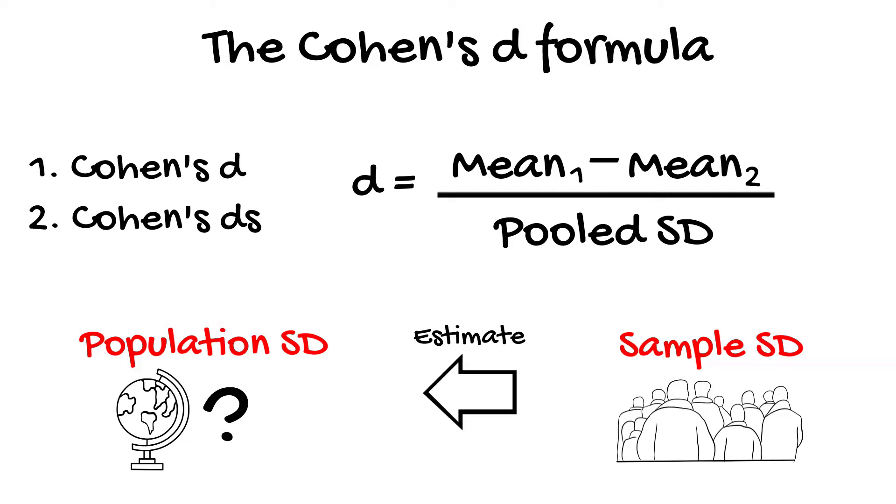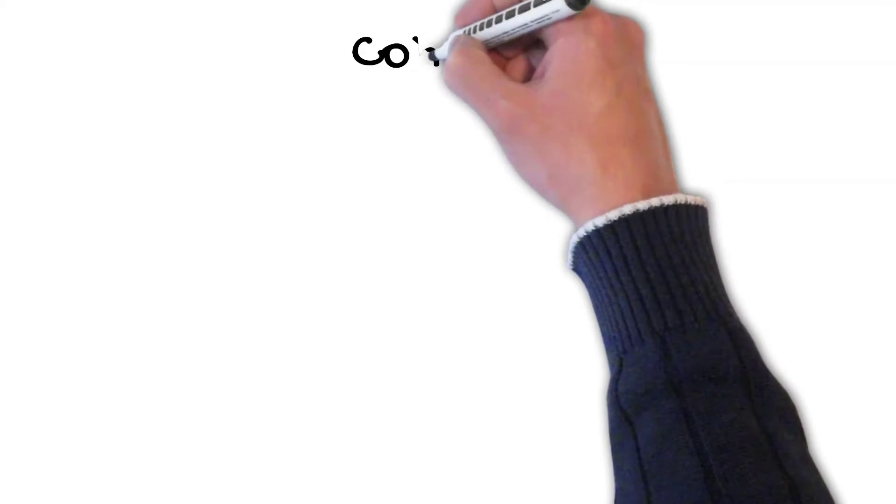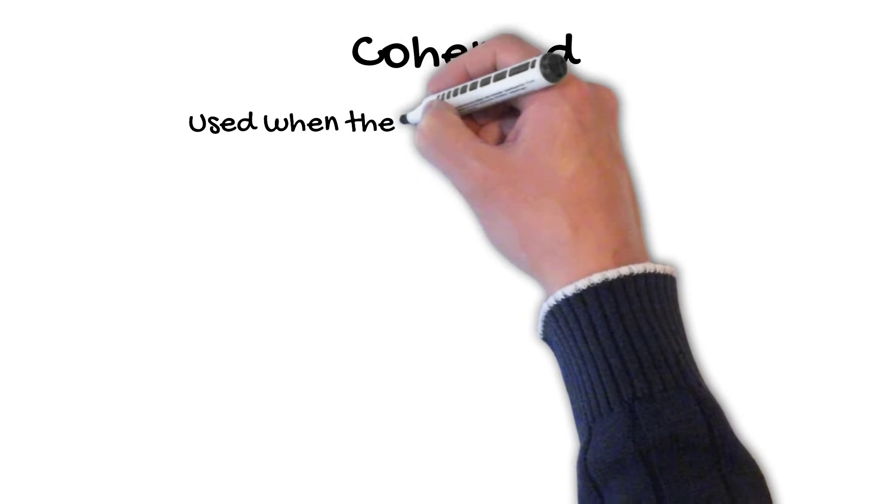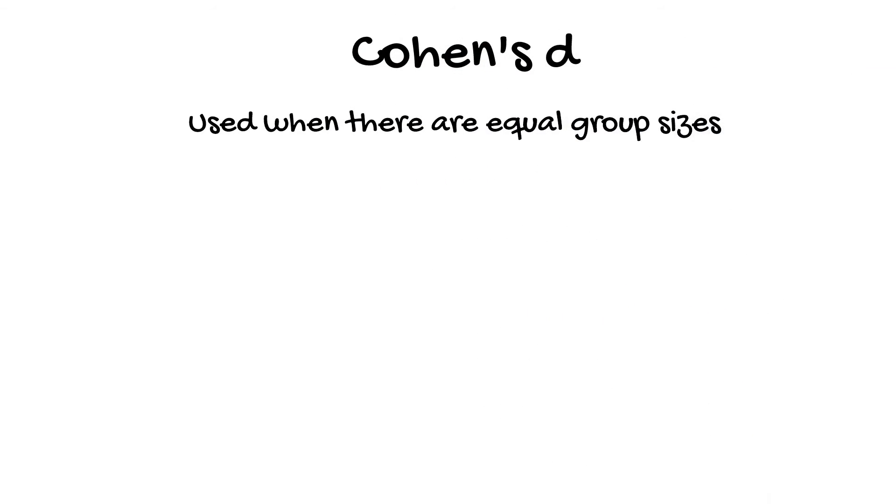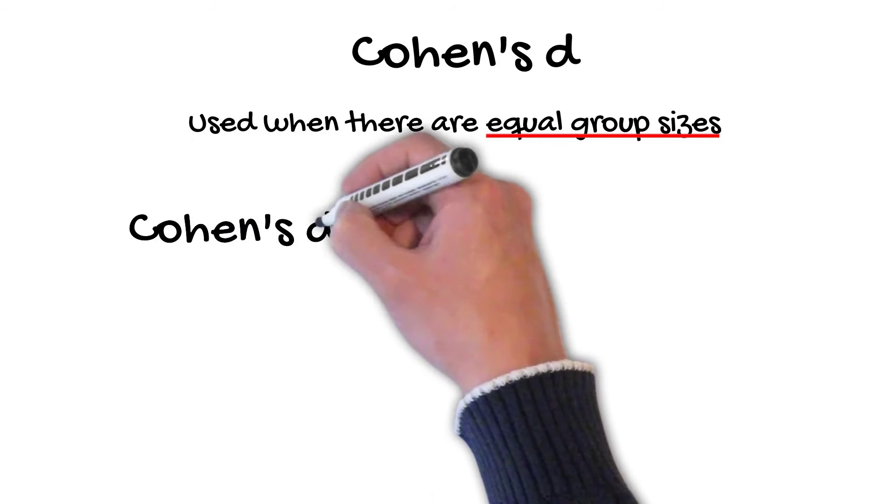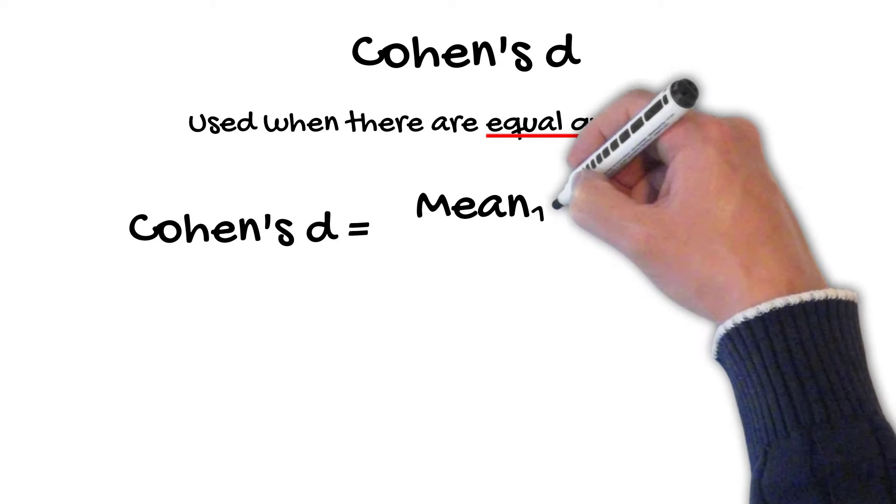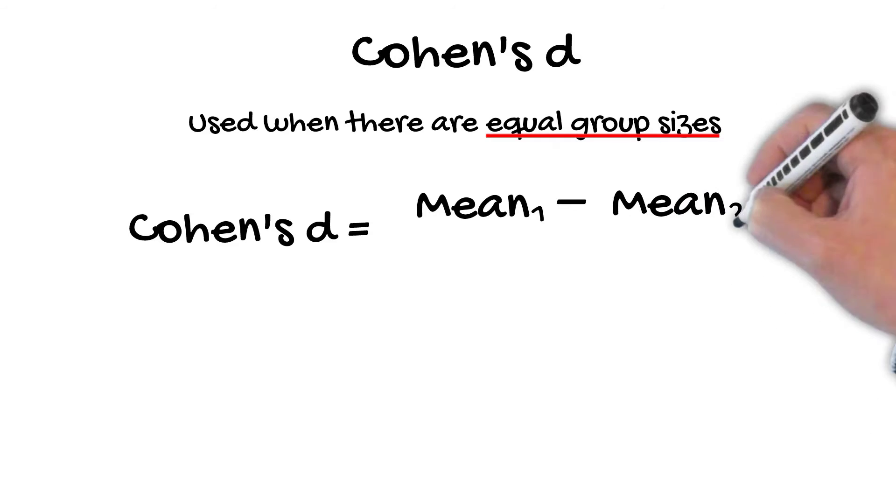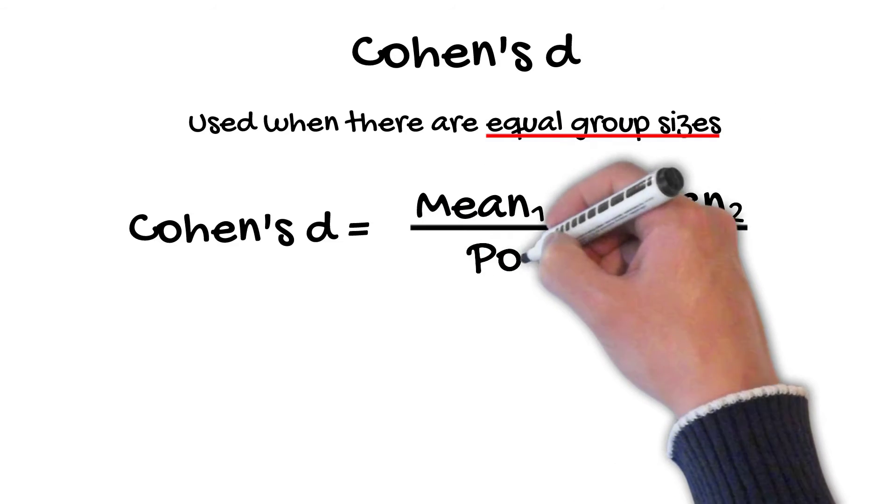Now, let's go over the two Cohen's D equations. For the original Cohen's D formula, this is used when there are two groups of equal sizes, so the N for each group is not required. Cohen's D equals the mean of one group minus the mean of the other group divided by the pooled standard deviation.